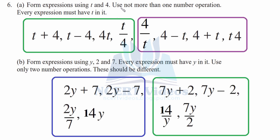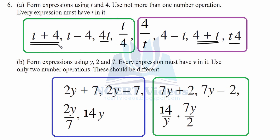So, these are the possible ways of expressions using two numbers — t and 4. We will use t first and then add another number. So: t plus 4, t minus 4, multiplication of 4 and t, and t divided by 4. Similarly, we can reciprocate it using 4 first: 4 divided by t and 4 minus t. We can also write 4 plus t and t into 4. However, one thing to note: t4 and 4t are the same because multiplication is commutative. Similarly, 4 plus t and t plus 4 are the same because addition is commutative, but subtraction is not commutative.